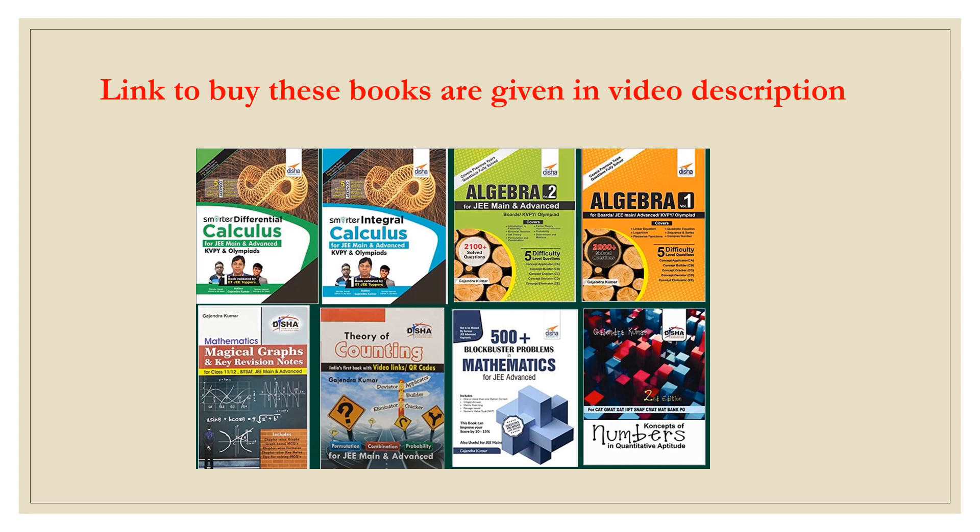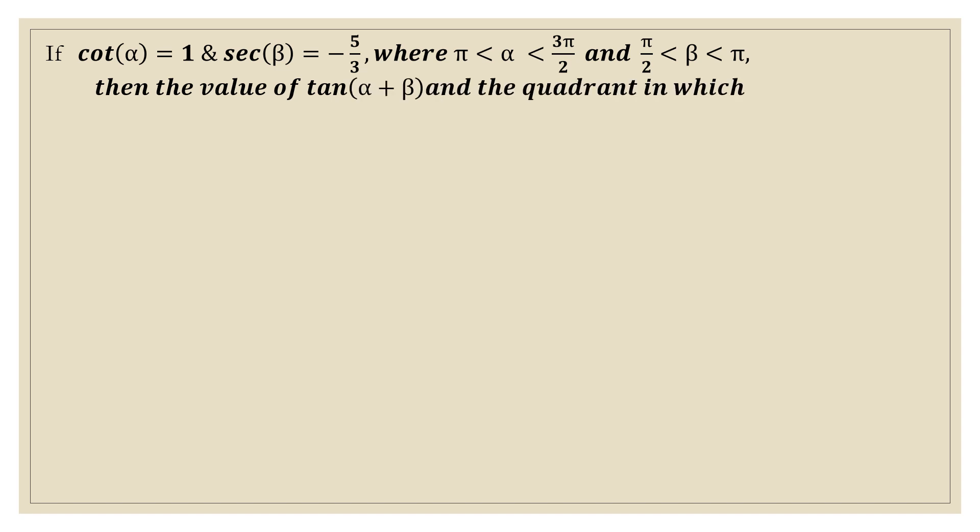So let's see the question. If cot α equals 1 and sec β equals minus 5 by 3, where α lies between π and 3π by 2 while β lies between π by 2 and π, then the value of tan(α + β) and the quadrant in which α + β lies respectively are.